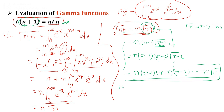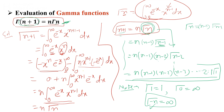There are two more important points to note: Gamma(1) = 1, Gamma(0) = infinity, and if we write Gamma(-1) or any negative integer, it becomes infinity. Please remember these relations.